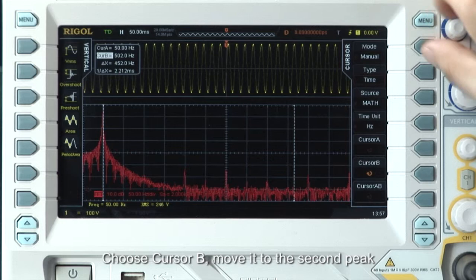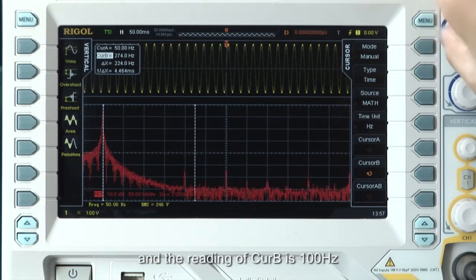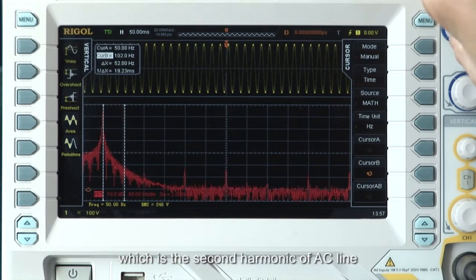Choose cursor B, move it to the second peak, and the reading of cursor B is 100 hertz, which is the second harmonic of the AC line.